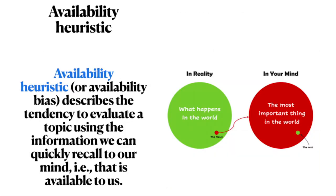Availability heuristic, or availability bias, describes the tendency to evaluate a topic using the information we can quickly recall to our mind — that is, what is available to us. However, this is not necessarily the best information; rather, it's the most vivid or recent. Even so, due to this mental shortcut, we tend to think that what we can recall must be right and ignore any other information.